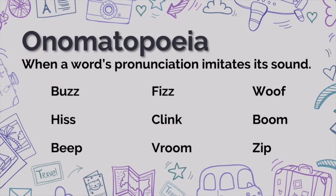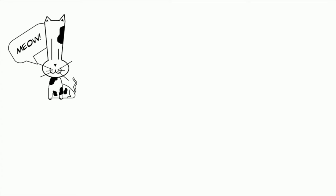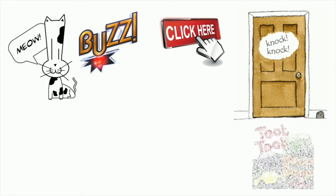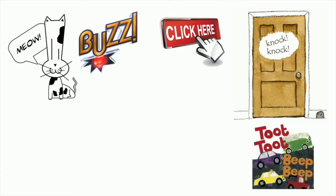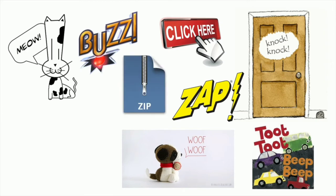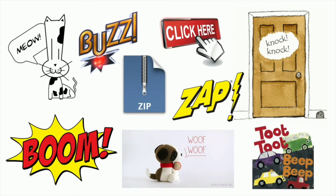So, let's analyze onomatopoeia. When a word's pronunciation imitates a sound, like buzz, hiss, beep, fizz, click, vroom, woof, boom, and zip. Let's take a look at some examples. So, those are examples of onomatopoeia.